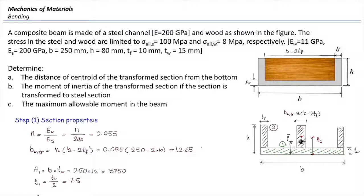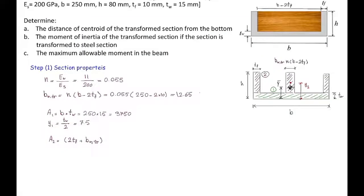For Area 2, we multiply the height of the section by the sum of the widths of those three parts: one TF on the left, one TF on the right, and the width of the transformed wood section in the middle. The height of the section is H minus TW. For the distance of the centroid to the bottom, that would be half the height of those parts plus TW. Plugging the numbers, we get 47.5 millimeters.